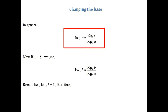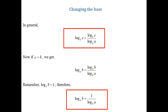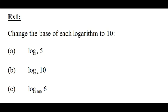Further to this, supposing c equals b — if I replace c by b, I'll have log of b to the base of a. Remember, log of b to the base of b equates to 1, so therefore log of b to the base of a will be 1 divided by log of a to the base of b. We're going to apply these two results to help us solve the following examples.